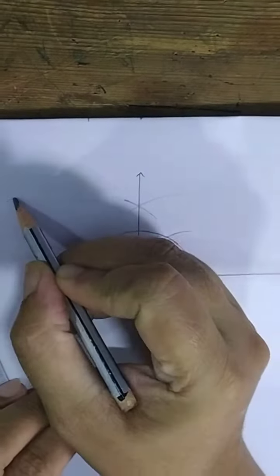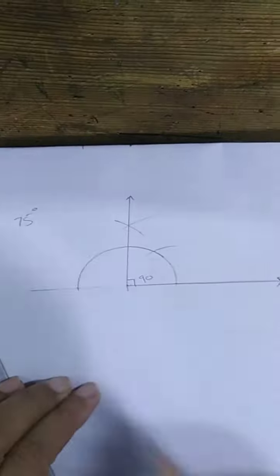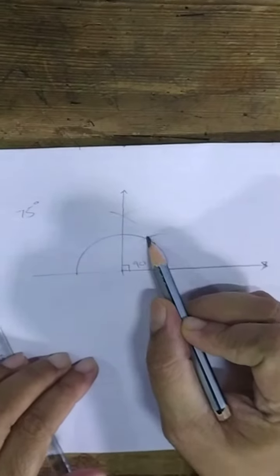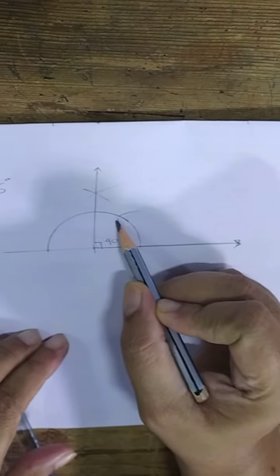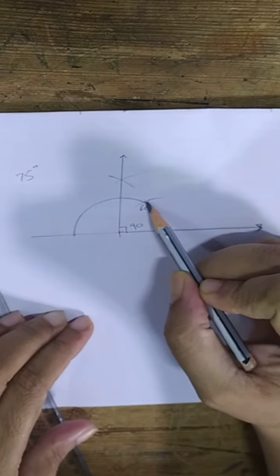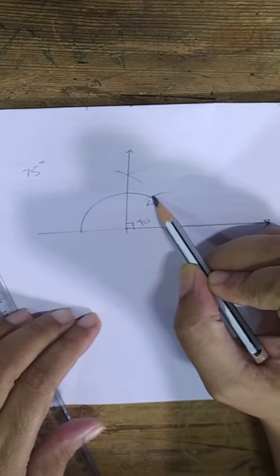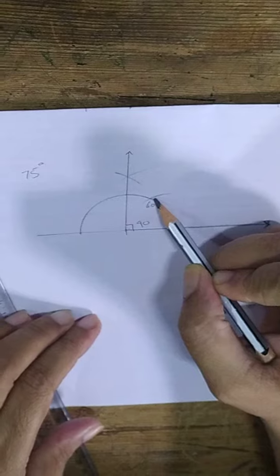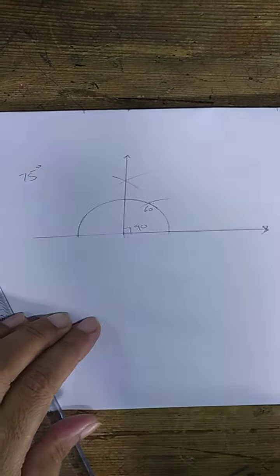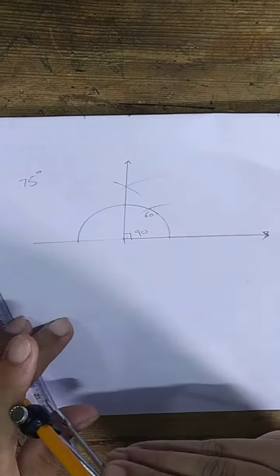Now, our requirement is of 75 degrees. If from here, if you draw the line, that will be for 60. So, 60 and 90. If you bisect these two, you will get 15. So, 60 plus 15 will be 75.